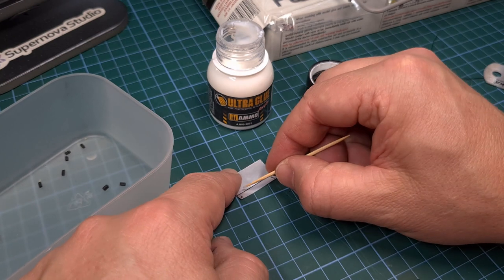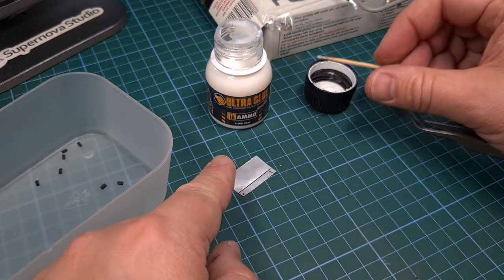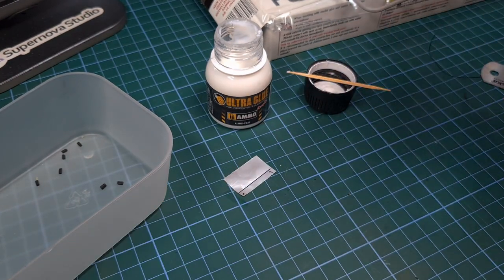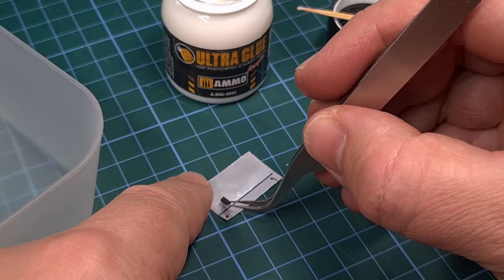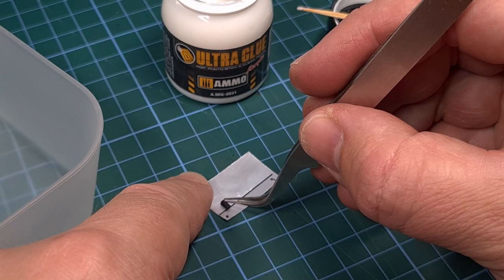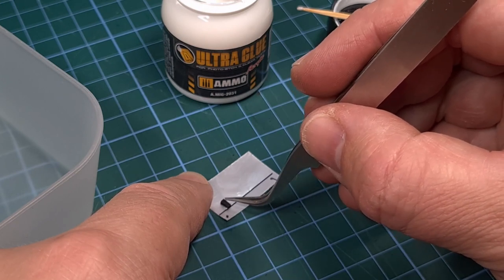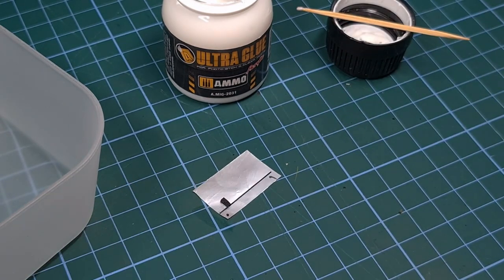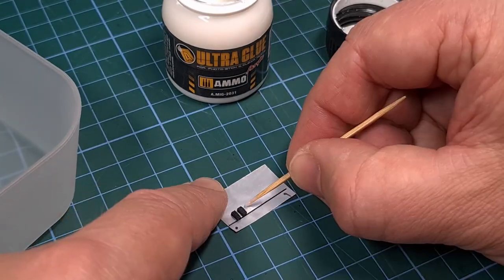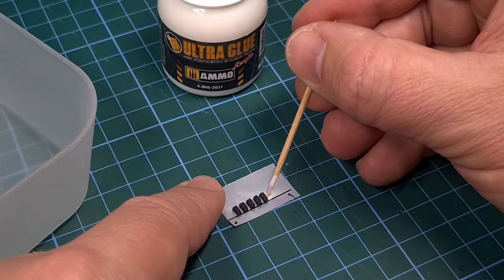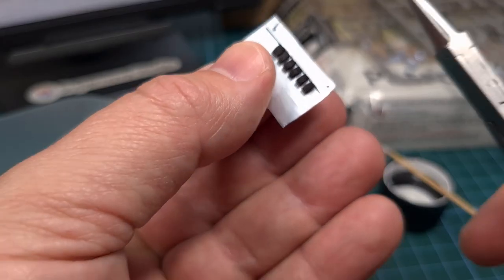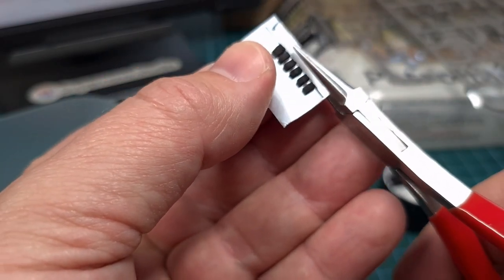Next I grab the piece of kitchen foil I used earlier, apply some ultra glue from Ammo MIG and I start placing these magazines on the inside of that little square of kitchen foil. Just remember to leave about a millimeter between each magazine so the folds will be visible later. There you go, these are the magazines glued into place.